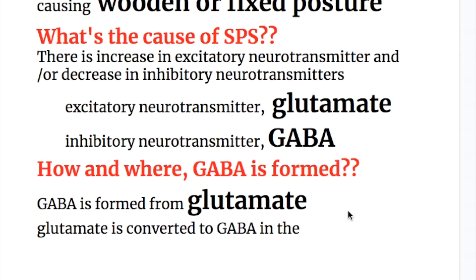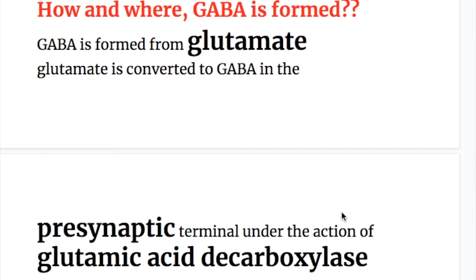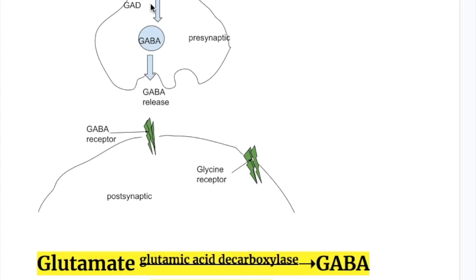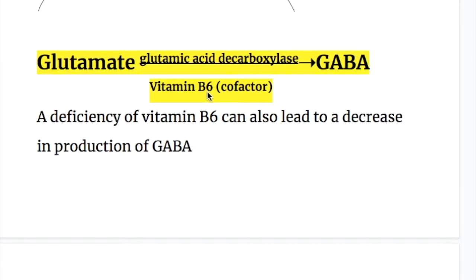GABA is formed from glutamate. Glutamate is converted to GABA in the presynaptic terminal under the action of the glutamate decarboxylase enzyme. So glutamate is the precursor of GABA — glutamate being the excitatory neurotransmitter and GABA being the inhibitory neurotransmitter.